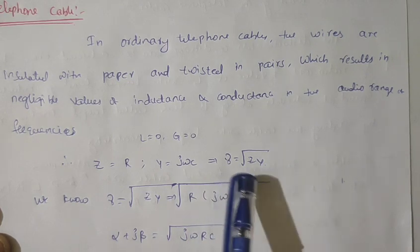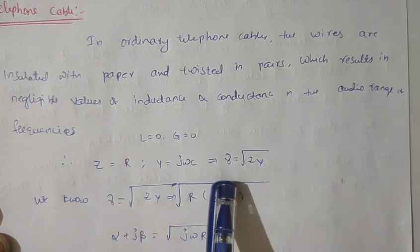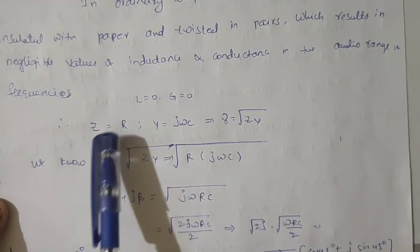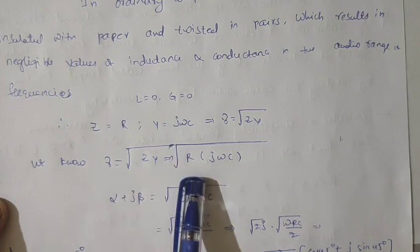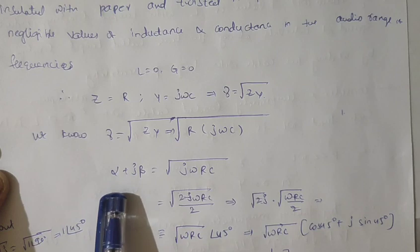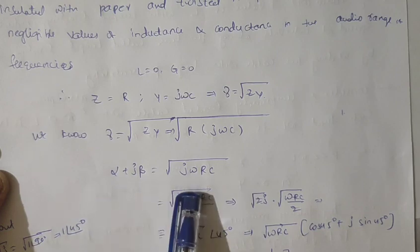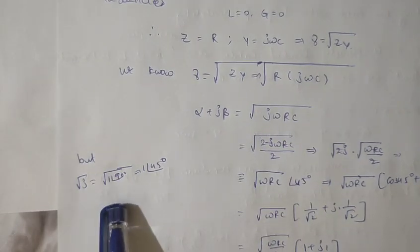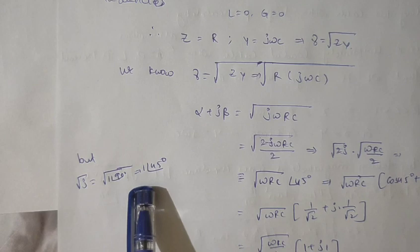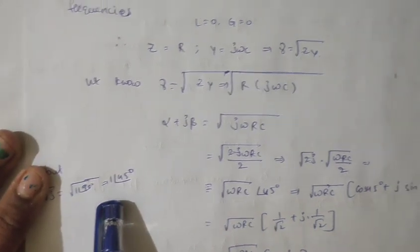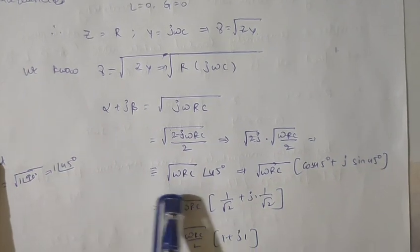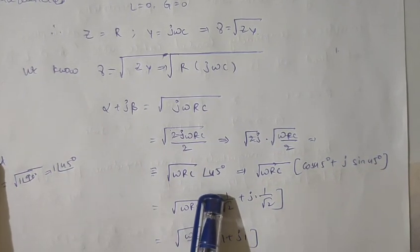We are going to find out the attenuation constant and phase constant. The propagation constant Gamma = √(Z × Y). Substituting Z and Y values, Gamma = √(R × jωC). Gamma is nothing but the attenuation and phase constants, equal to √(jωRC). We know that √j = √(1 at angle 90°), which gives 1 at angle 45°. Substituting this value, we get α + jβ = √(ωRC) at an angle of 45 degrees.